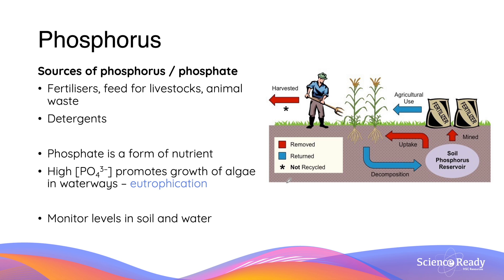Unlike carbon, nitrogen, or sulfur, phosphorus has no stable gaseous form, and so all sources of phosphorus must be endogenic, meaning they come from the earth. These sources include fertilizer, feed for livestock, animal waste, and detergents in waste runoff.